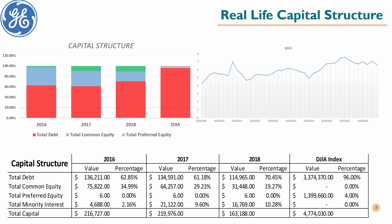We can see that debt levels have been increasing over the last few years, to a level over 70% by the end of 2018. However, to understand if this debt increase has been useful, we should also look at the weighted average cost of capital of the firm — the chart on the right of the screen.